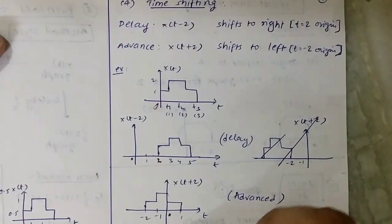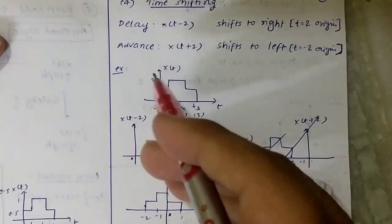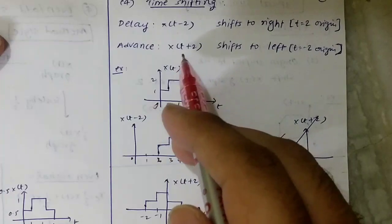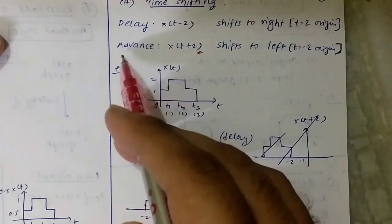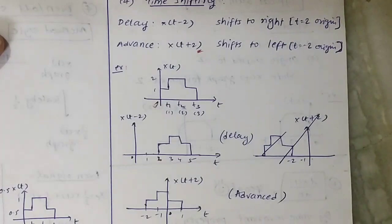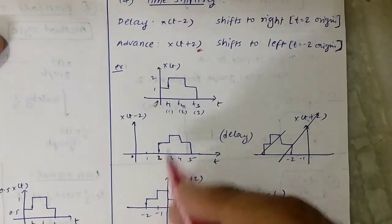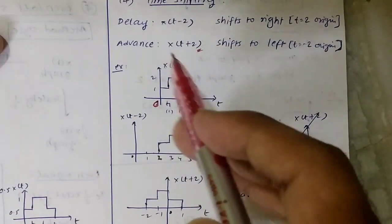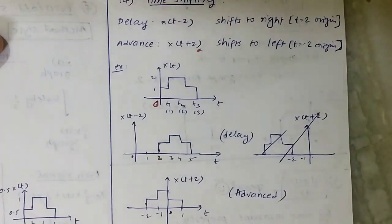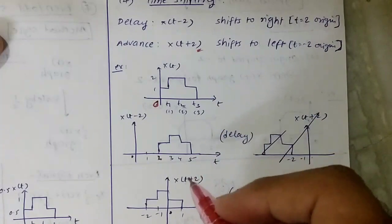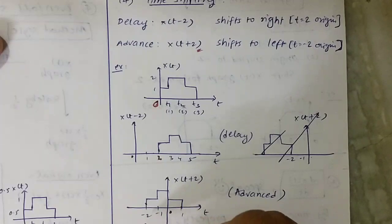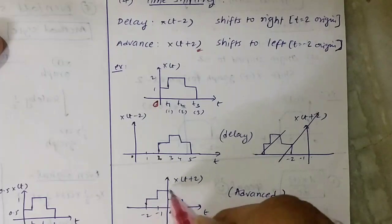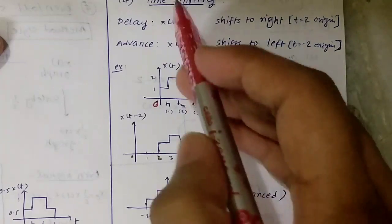Let's see this by an example. We take X(t+2), also known as an advance because we are advancing the function. The original X(t) graph has origin at 0. For X(t+2), equate t+2 = 0, giving t = -2. So the origin shifts to -2, and the graph of X(t) remains the same shape.